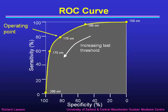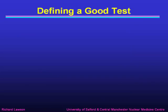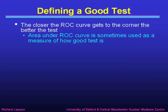So we could choose an operating threshold of 170 centimetres, which gives us 80% sensitivity and 80% specificity, or we could choose to operate at a different threshold, giving us a different combination of sensitivity and specificity. We've used the area under the curve — the grey shaded area — to test how good the test is, because the closer the curve gets to the corner, the bigger the area, and the better the test.